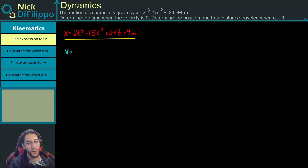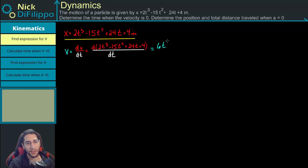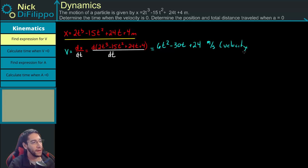Velocity is equal to the derivative of position with respect to time. So taking the derivative of 2t³ - 15t² + 24t + 4, we get v = 6t² - 30t + 24 meters per second. This is our expression for velocity.